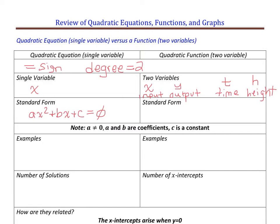The function form — you're just going to replace that 0 with the second variable y. So ax² + bx + c = y. This is your dependent variable, and it's dependent on whatever x equals.